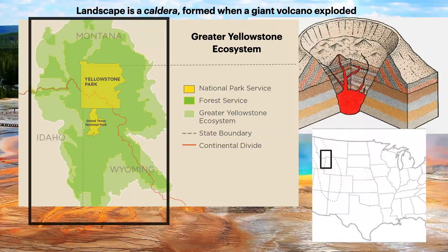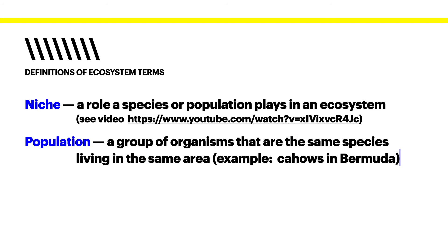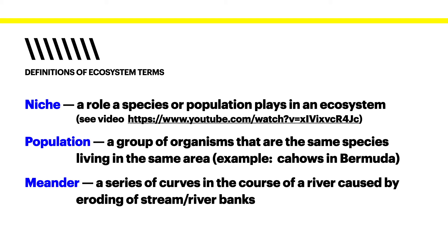There are some words you'll want to become familiar with — a definition of ecosystem terms. The first is niche: the role a species or population plays in an ecosystem. Population: a group of organisms that are the same species living in the same area — for example, Cahow in Bermuda, species living in or making use of the island of Bermuda. And finally, meander: a series of curves in the course of a river caused by the eroding of stream or river banks. A meandering river is usually a very slow-moving river across a relatively flat landscape — it erodes the banks and widens and narrows.